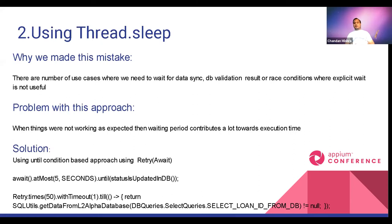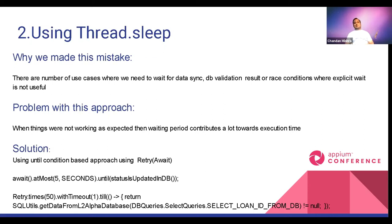With parallel execution, race conditions occurred. To handle this, we used Thread.sleep — if the maximum wait time was five minutes, we'd sleep for six minutes. It was fine at first, but one day the consumer stopped working and all DB-related tests failed, causing the build to take eight to nine hours. That day we realized we couldn't keep using Thread.sleep for test execution.